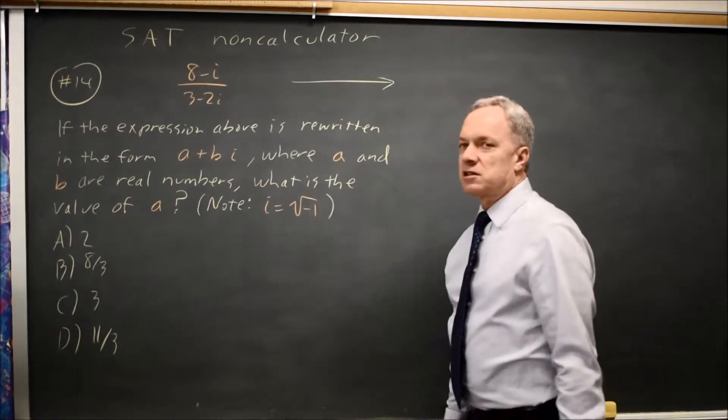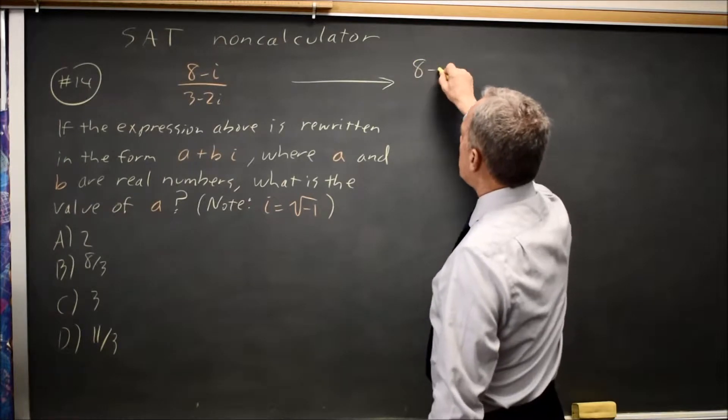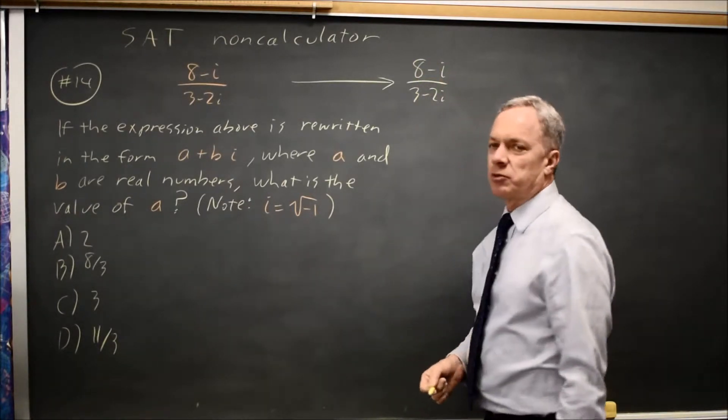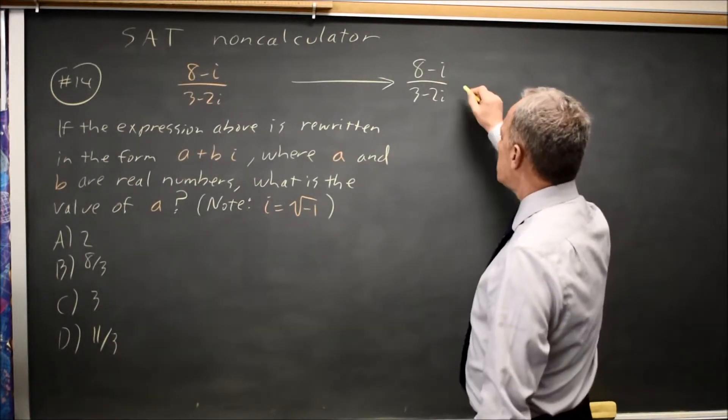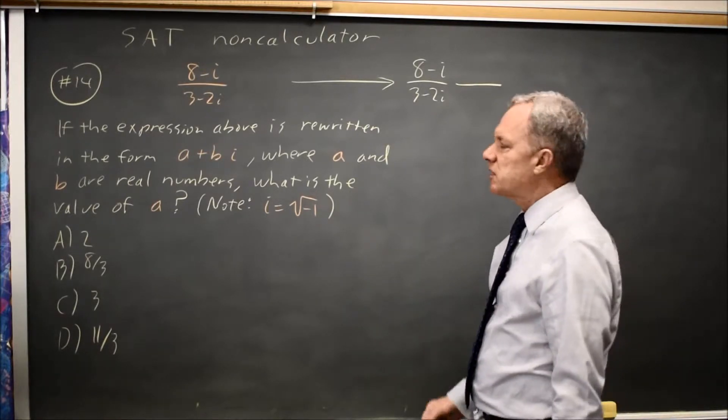This is the hardest of the complex number problems. If you have 8 minus i over 3 minus 2i, or any fraction where the numerator and denominator are both complex numbers to write in a plus bi form, you multiply by the complex conjugate of the denominator over itself.